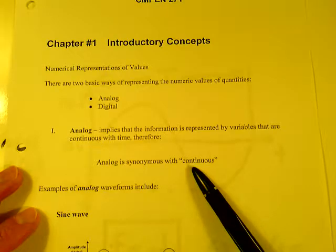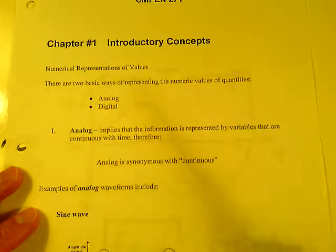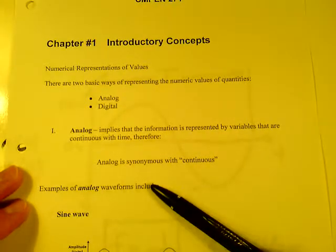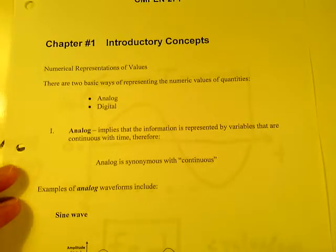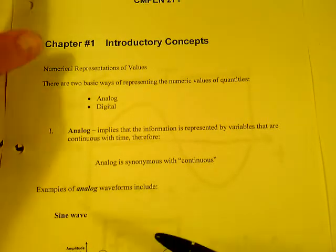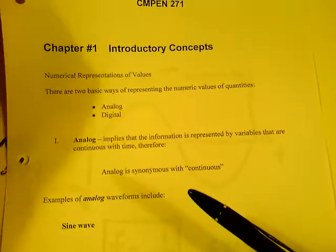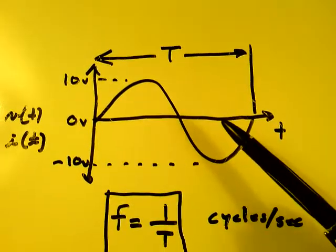The next course, EE-210, we're going to spend a lot of time, it's all analog. But I want to mention it right now so you know what it's all about. Examples of analog waveforms include the sine wave, at the bottom of page number 1. And the sine wave is the most popular analog representation because it happens naturally in the real world. But let's take a look at a sinusoidal waveform here on my whiteboard.